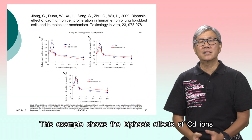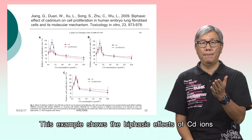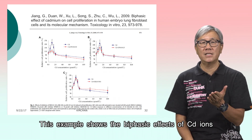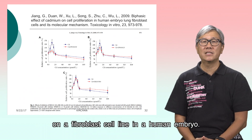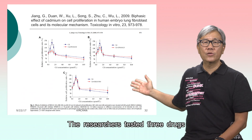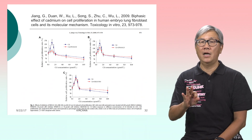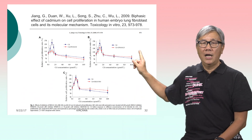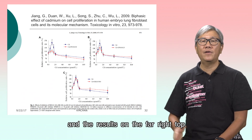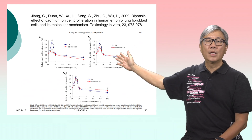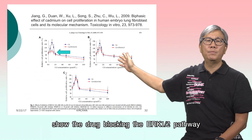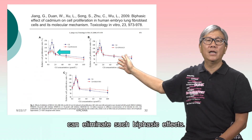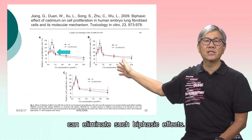This example shows the biphasic effects of cadmium ions on a fibroblast cell line in a human embryo. The researchers tested three drugs, and the results on the far right top show that the drug blocking the ERK1/2 pathway can eliminate such biphasic effects.